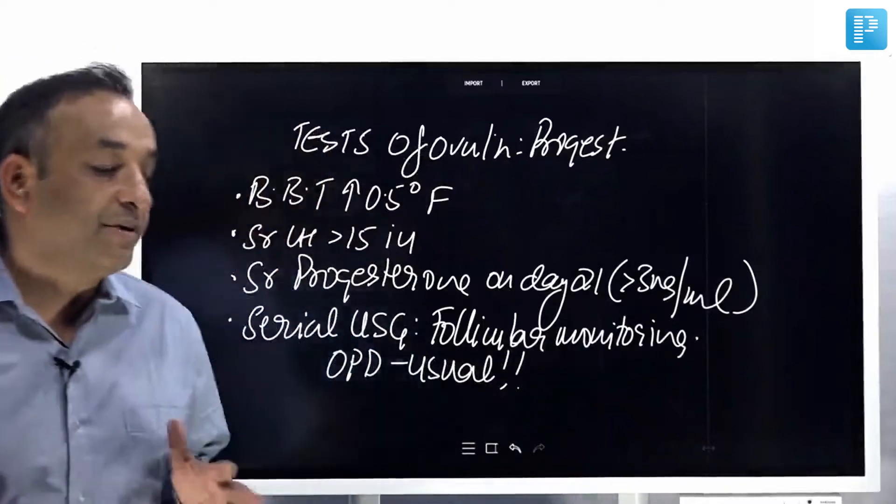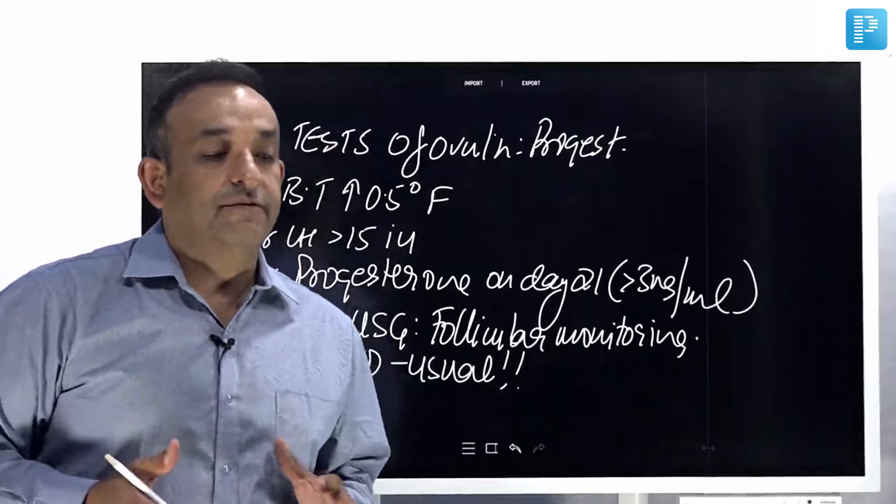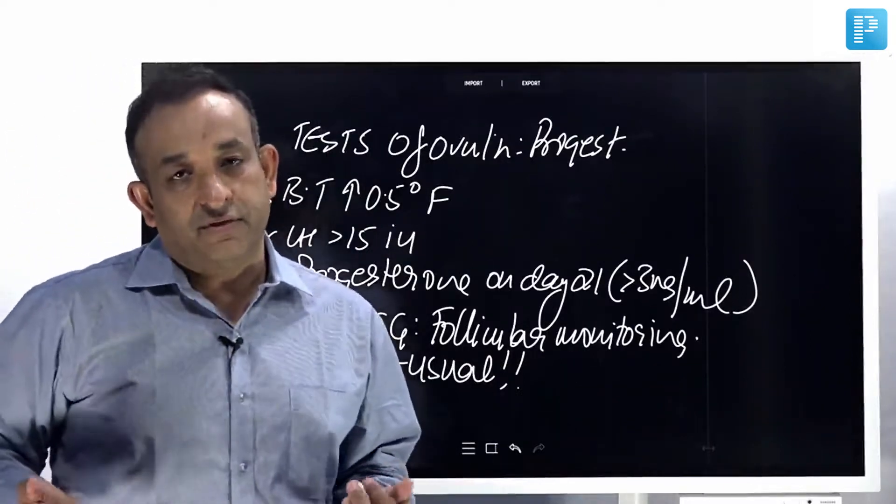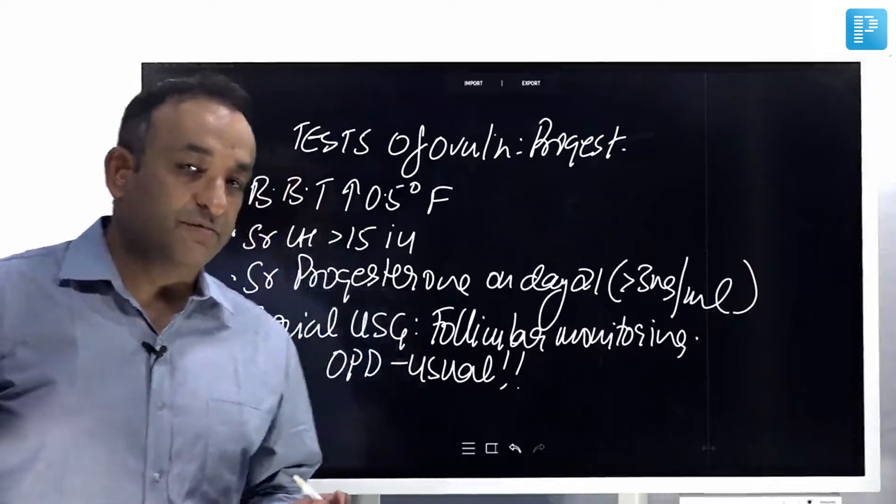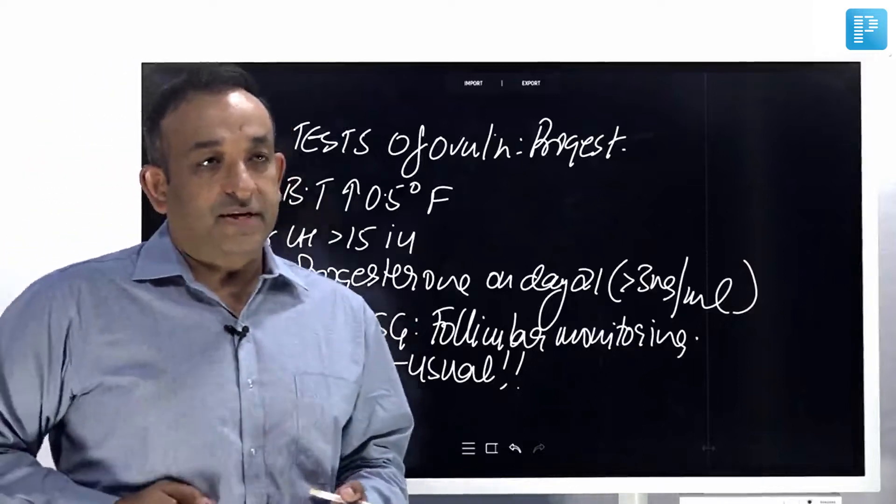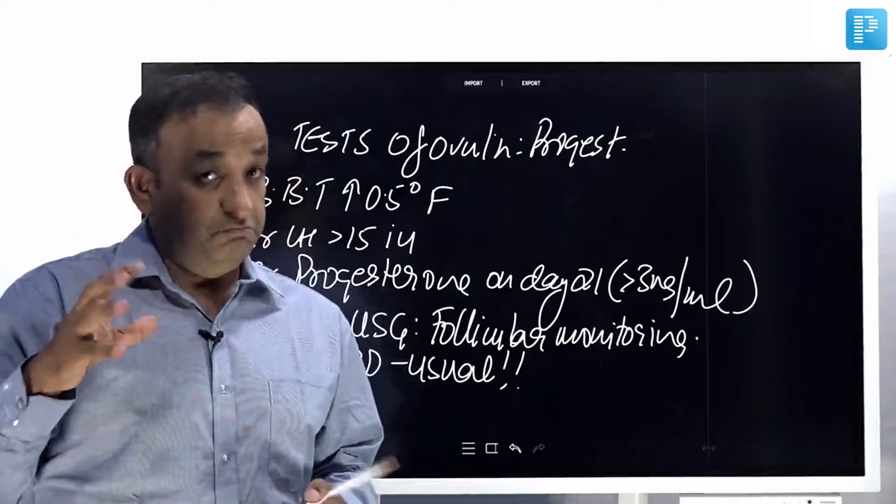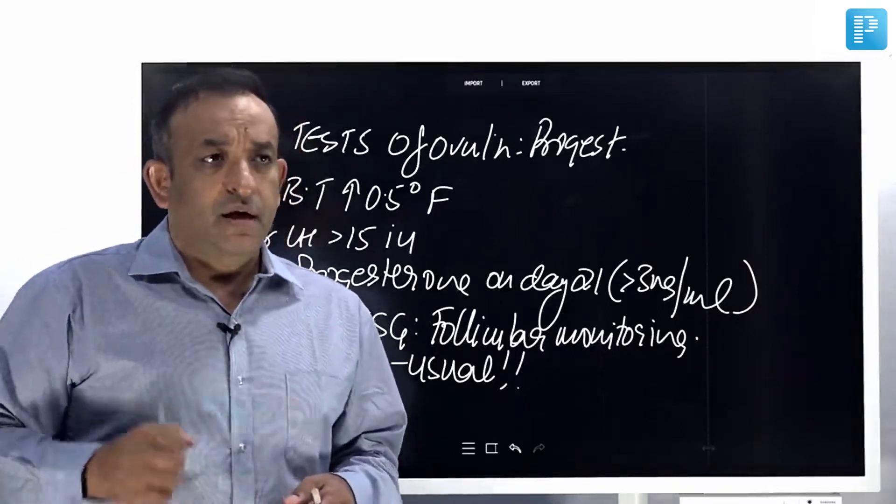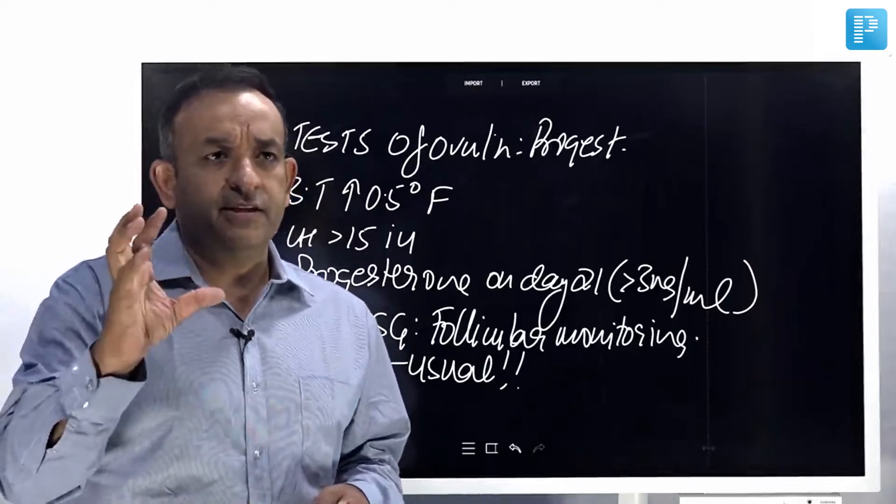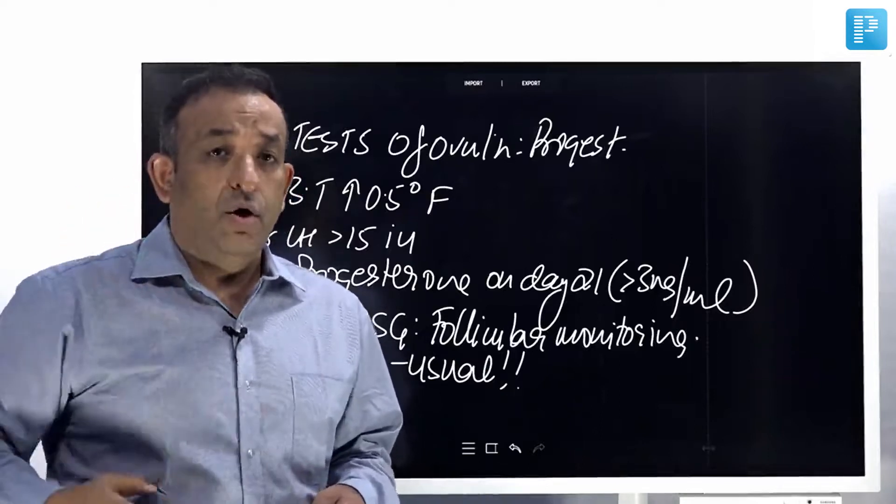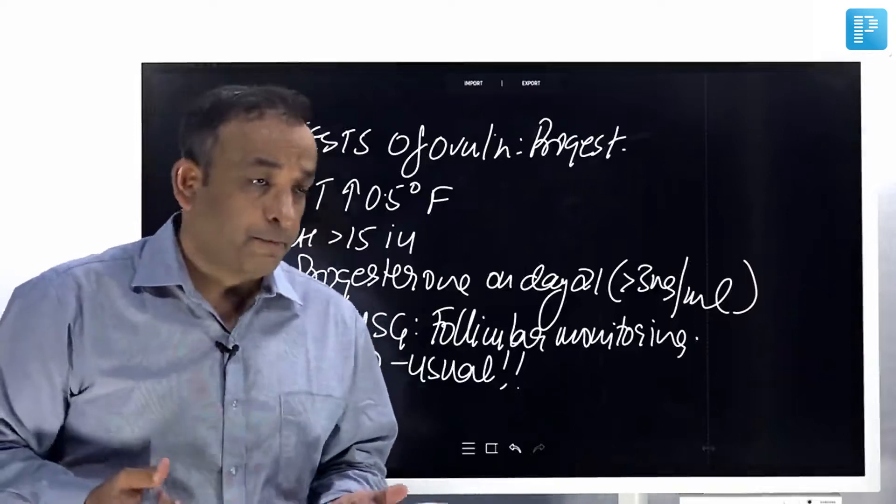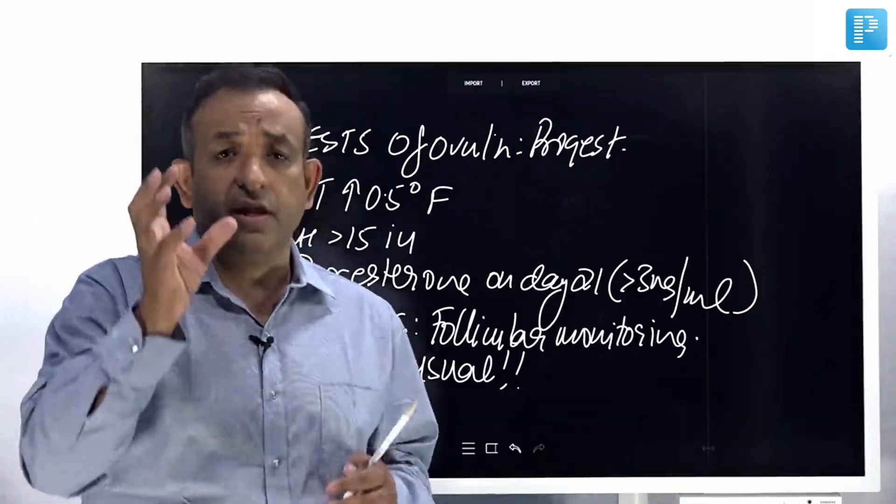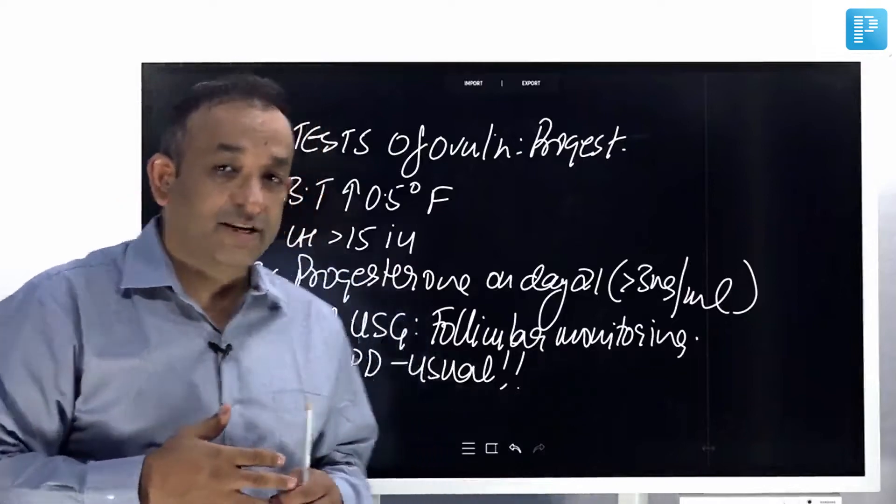The way I check ovulation in women having follicular monitoring: I start on day 9 of the menstrual cycle. Suppose she had period on the 1st of August. On the 9th, I'll do an ultrasound on the tummy and see if the follicle is growing. It would have reached dominance by day 9. Then I'll do it on day 11, 12, 13. On day 12-13, it's around 15-16 millimeters. On day 14, it is 18 millimeters. On day 16, I see the follicle has shrunk. If the follicle has shrunk, it means the patient has ovulated.